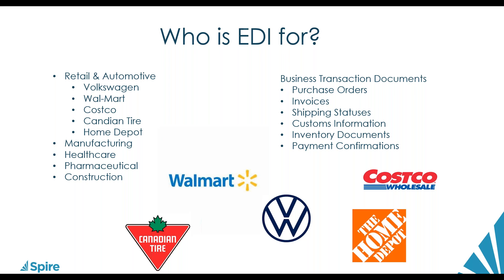Once you're set up for EDI with a retailer like Home Depot, the first thing you're going to get is an 850 purchase order. From there, companies require additional documents. The 855 is to acknowledge a purchase order. The 800 series is all for a retail base, but then you have other series — like the 200 series for medical industries, such as a hospital buying supplies from a supplier. There are thousands of different types of documents in the EDI world.